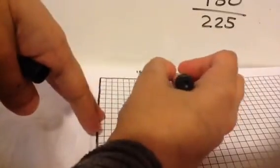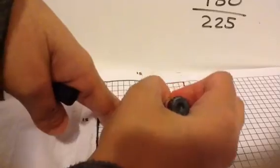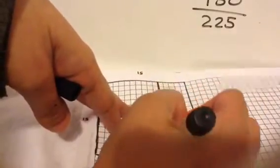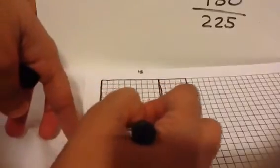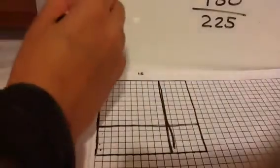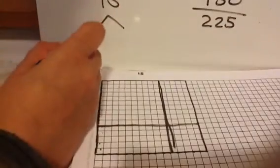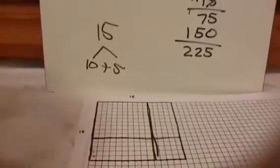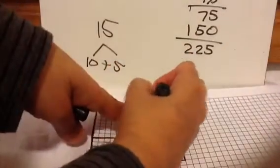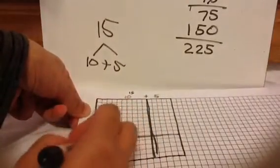Now what we're going to do is break it apart into area models. We're going to do ten plus five on each side — because when you break up fifteen in expanded form for distributive property, it's ten plus five. So this side is going to be ten plus five, and this side is going to be ten plus five.